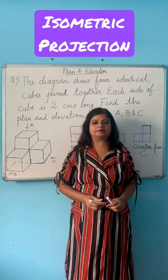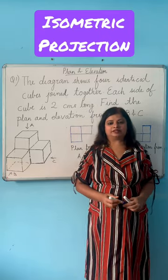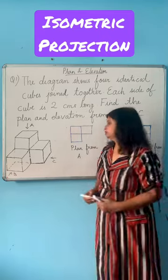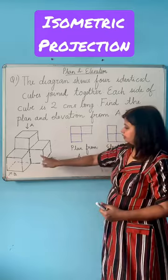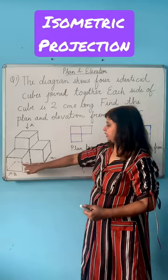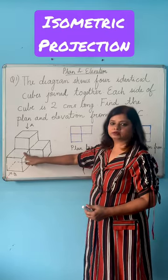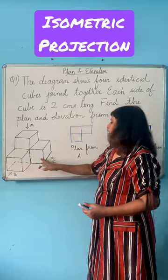Hi, this is Shweta from MassVayam and I am with another problem on isometric projection. There are 4 cubes which have been kept like this. The 4th cube is not visible.